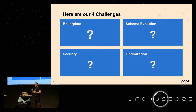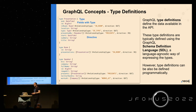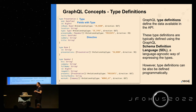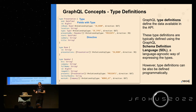These four challenges — boilerplate, schema evolution, security, optimization — how can we address them? GraphQL type definitions have types and fields, and something really cool they added is directives, which are extension points. They didn't know about Java annotations back then, but directives are very much like annotations for metadata. With directives, you can add metadata to the type system, to the query, to the fields — and this metadata can be used by infrastructure and tools to improve the user experience and enhance the APIs.